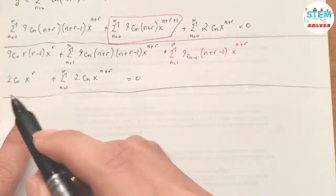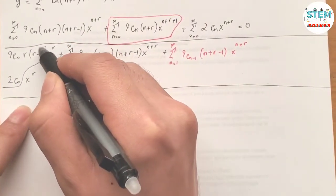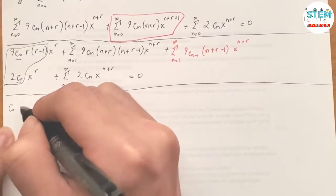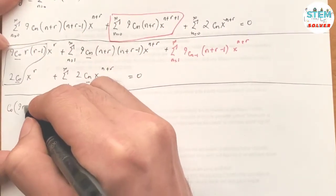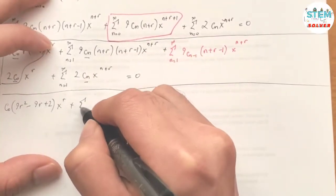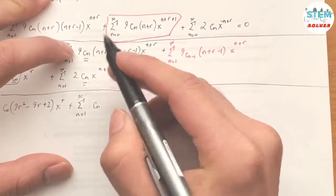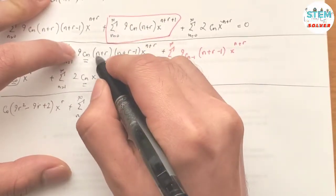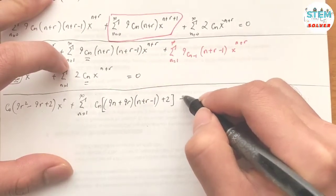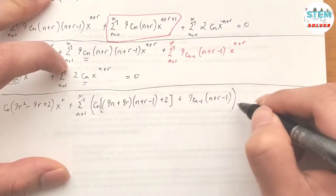Now we combine like terms. The leading coefficient for x^r has c₀ in common, so factoring out c₀ · x^r gives the indicial expression: 9r² − 9r + 2. For the series from n=1, factoring out cₙ gives: 9(n+r)(n+r−1) + 2, plus the term 9cₙ₋₁(n+r−1) equals 0.